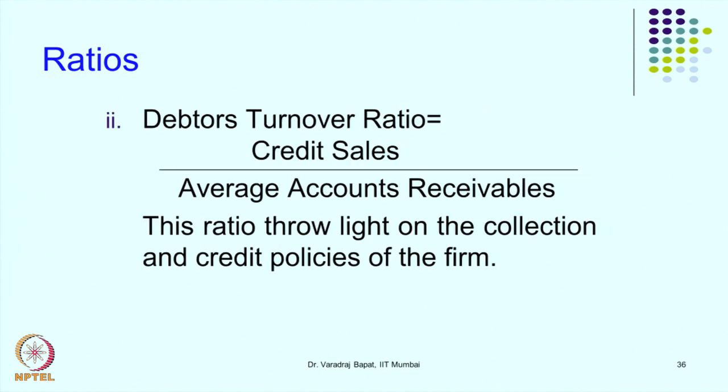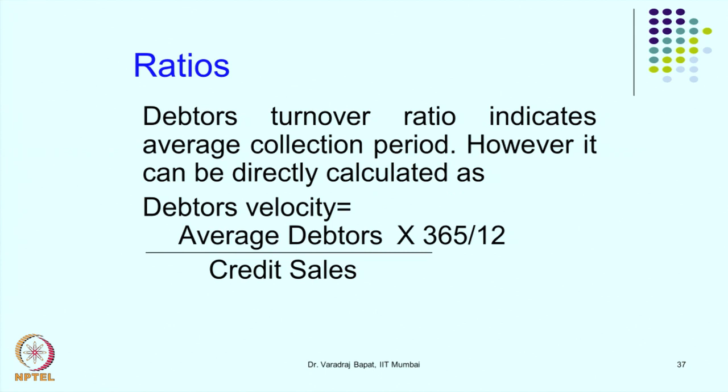Similarly for debtors, we can calculate the debtors turnover ratio, and we can also calculate debtors velocity — that is, the number of days of debtors. This is useful for knowing how well the company is managing debtors. We can compare it with their standard credit policy — for example, if as per policy they give credit for 30 days but the ratio shows 33, it means they are slightly slow in collection. If the ratio is 50 versus a standard of 30, it means they are very slow in collection, and from an audit angle it could indicate a possibility of some overstatement of debtors. Then we would go for an aging schedule or other techniques to examine how long those receivables are pending.